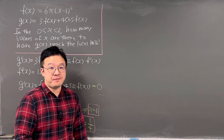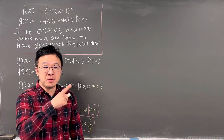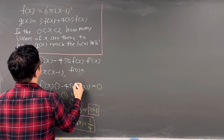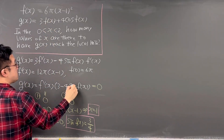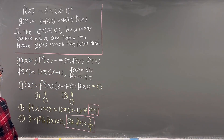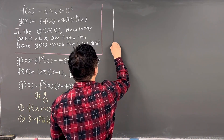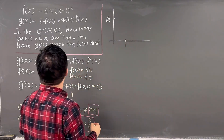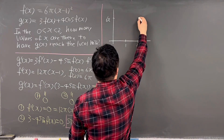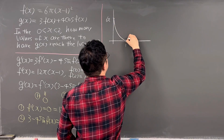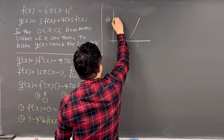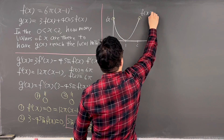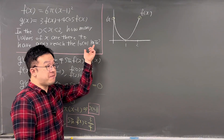Before going further, let's think about the graph of f(x) = 6π(x−1)². For x between 0 and 2, f(0) = 6π and f(2) = 6π. When x = 1, f(x) = 0. So the graph is a parabola with vertex at (1, 0), reaching 6π at both endpoints — which are excluded since x is strictly between 0 and 2.